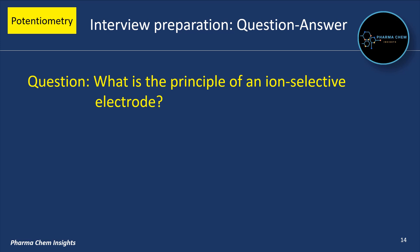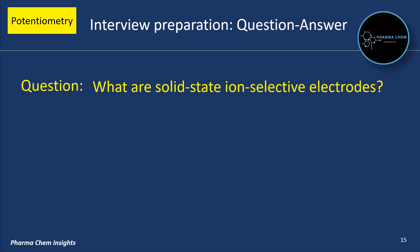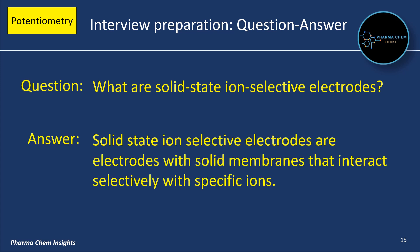What is the principle of an ion selective electrode? The principle of an ion selective electrode is based on selective interaction with target ions to generate a measurable potential difference. What are solid state ion selective electrodes? Solid state ion selective electrodes are electrodes with solid membranes that interact selectively with specific ions.